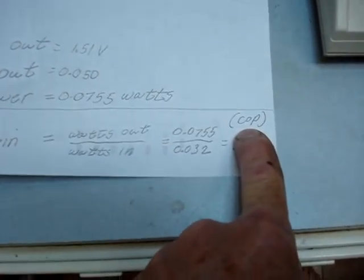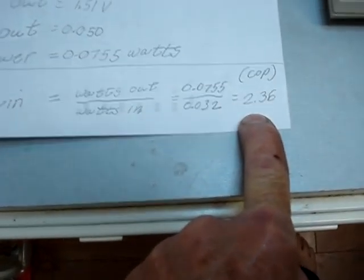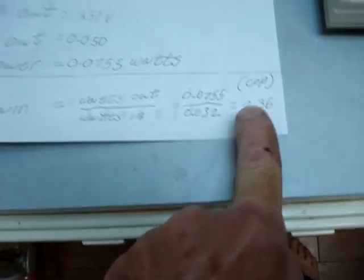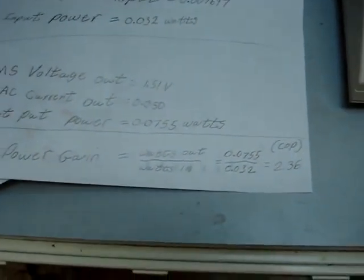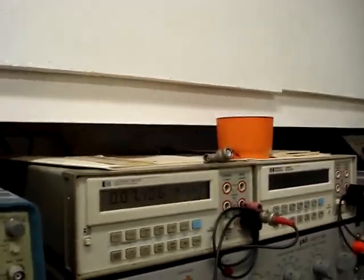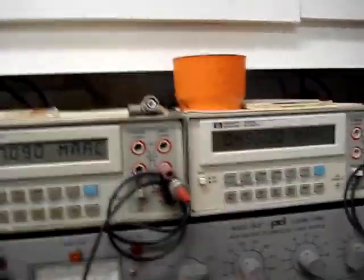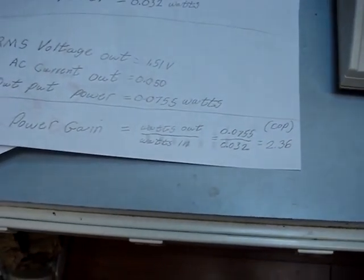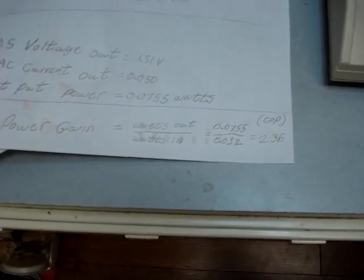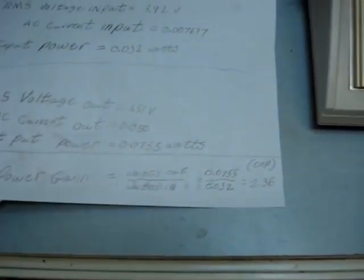Which seems to be a COP of 2.36. So assuming that I'm doing my calculations right, my meters are identical and they're both in series - this meter's in series with my input, this meter's in series with my output. Looks like I'm getting a little more out than I'm putting in. That's all I've got right now. Thank you and have a wonderful day.